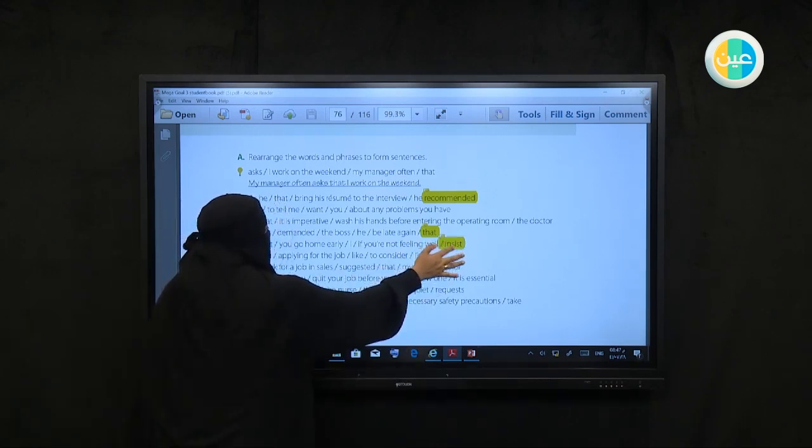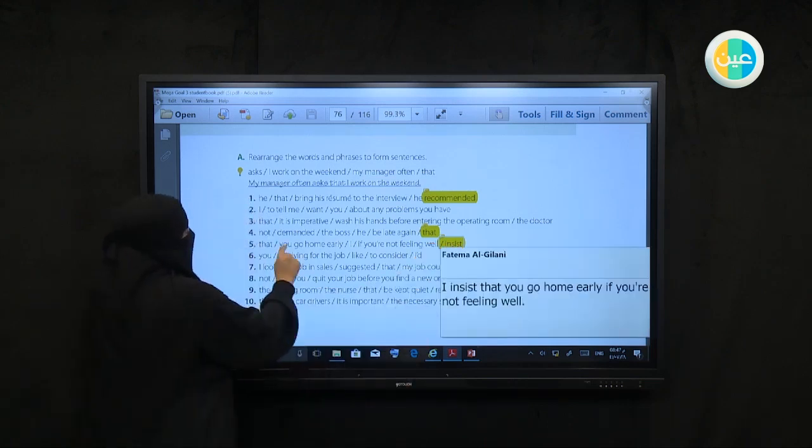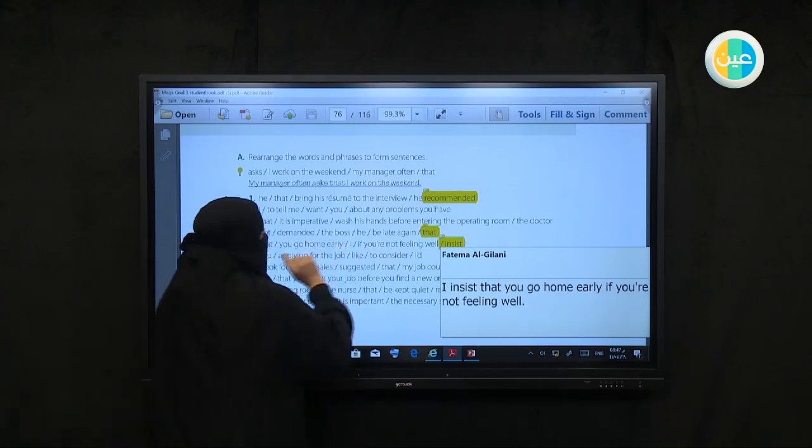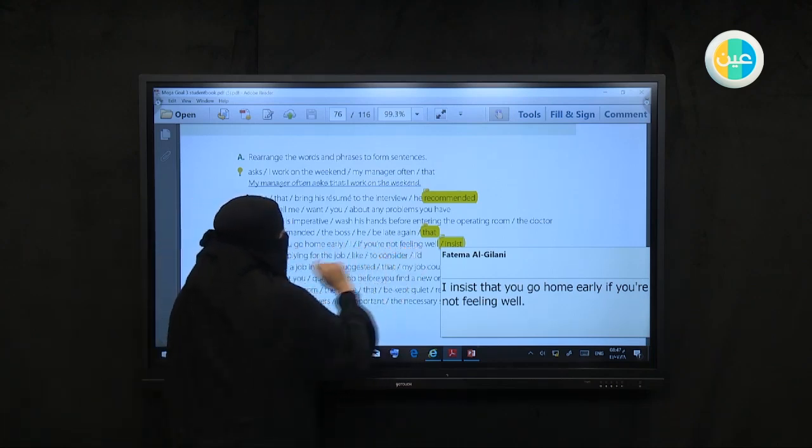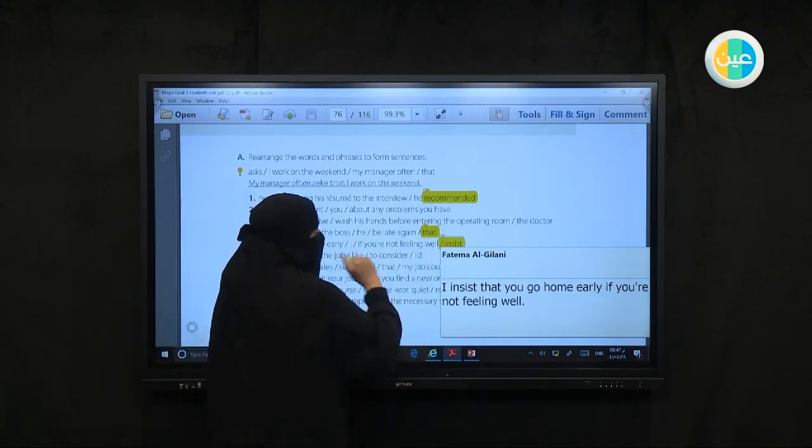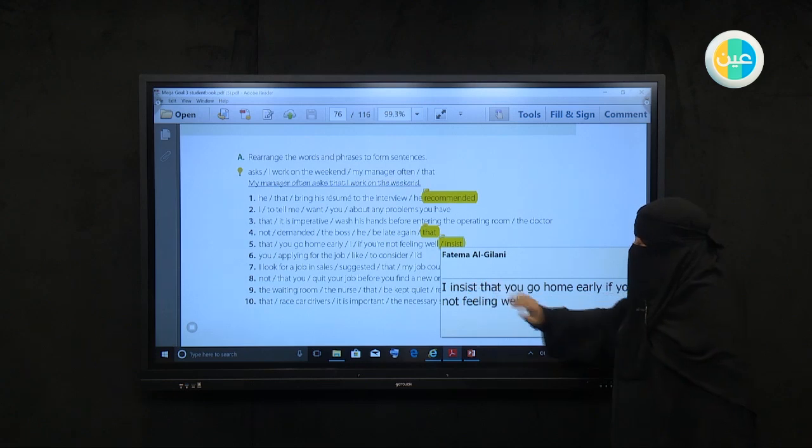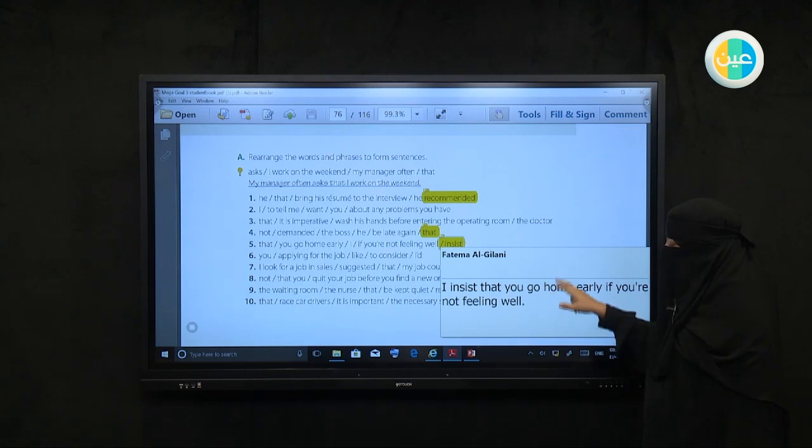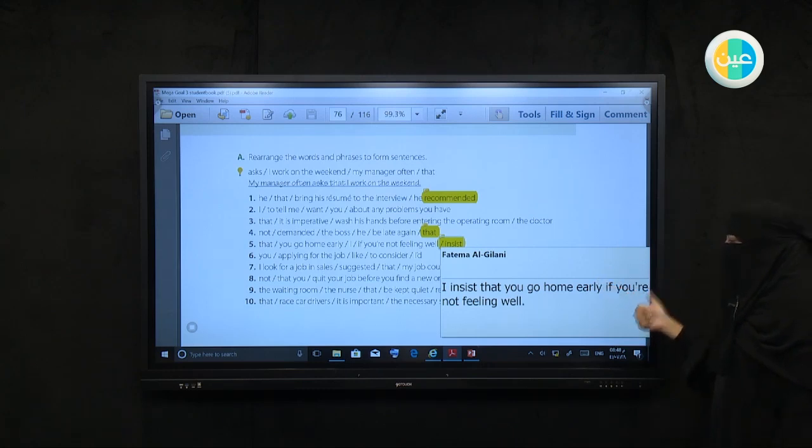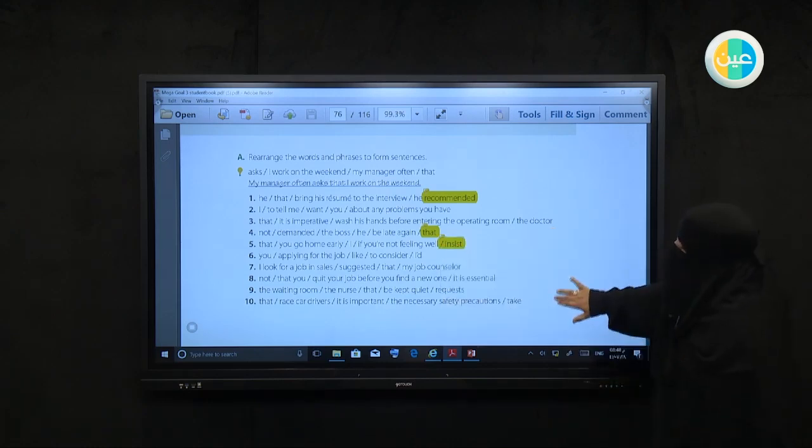Last example. Number five has 'that'. 'That go home early' if you're not feeling well, and 'insist'. The first verb will be 'insist'. I insist - I insist, 'that' is the connector, I insist that you - and here comes the subjunctive which builds on the insistence here. I insist that you go home early if you're not feeling well.